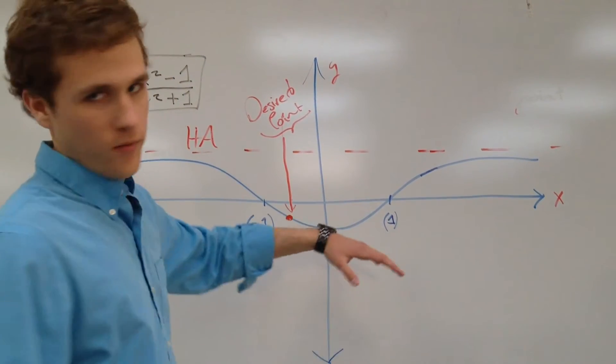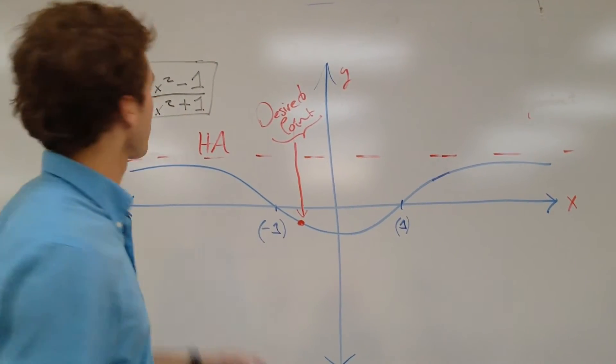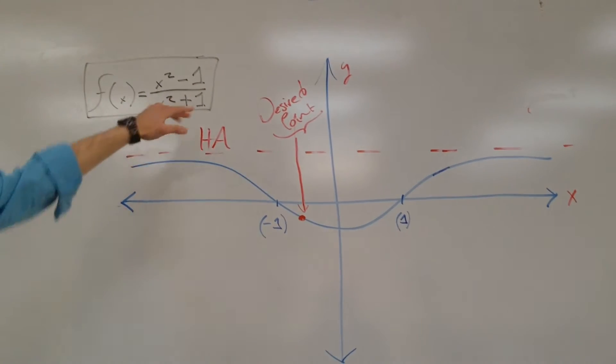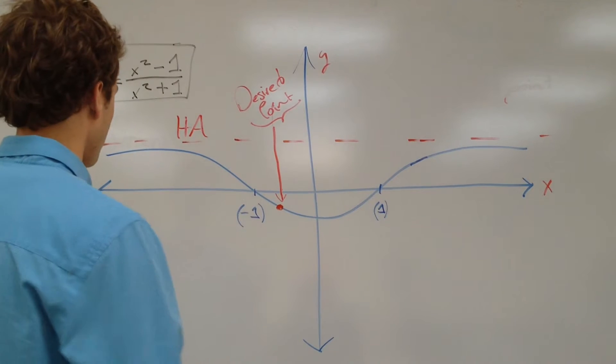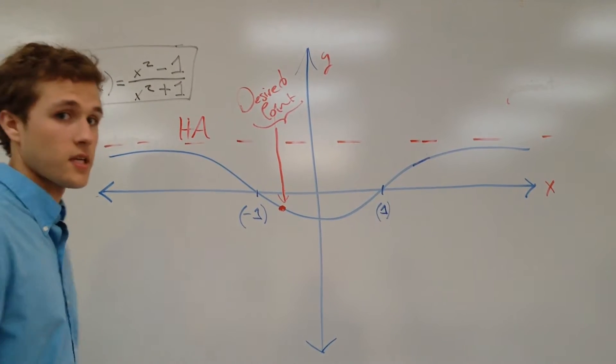So here we have a graph, this is a graph of a simple rational function, f of x equals x squared minus 1 over x squared plus 1, a simple function, not hard to graph, but that's not what we're trying to do here.